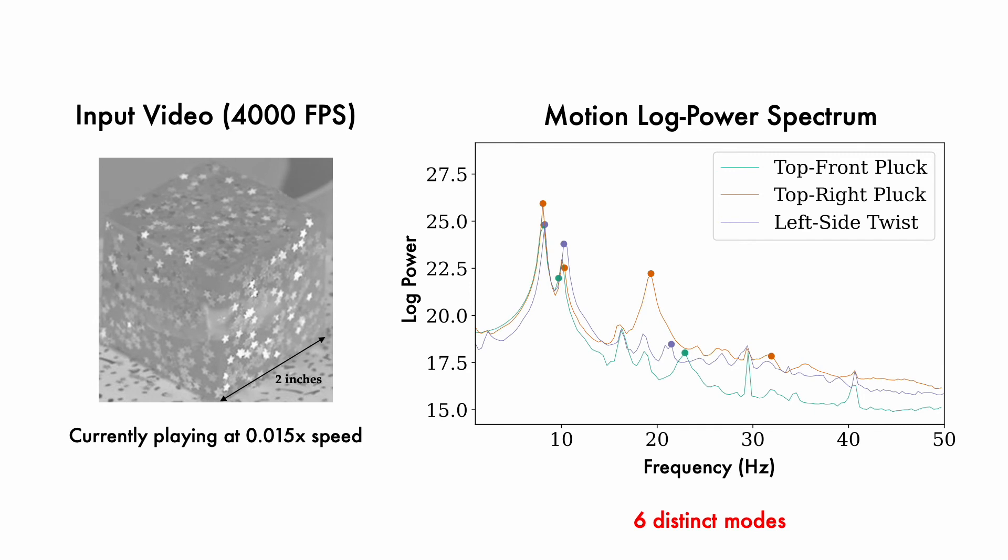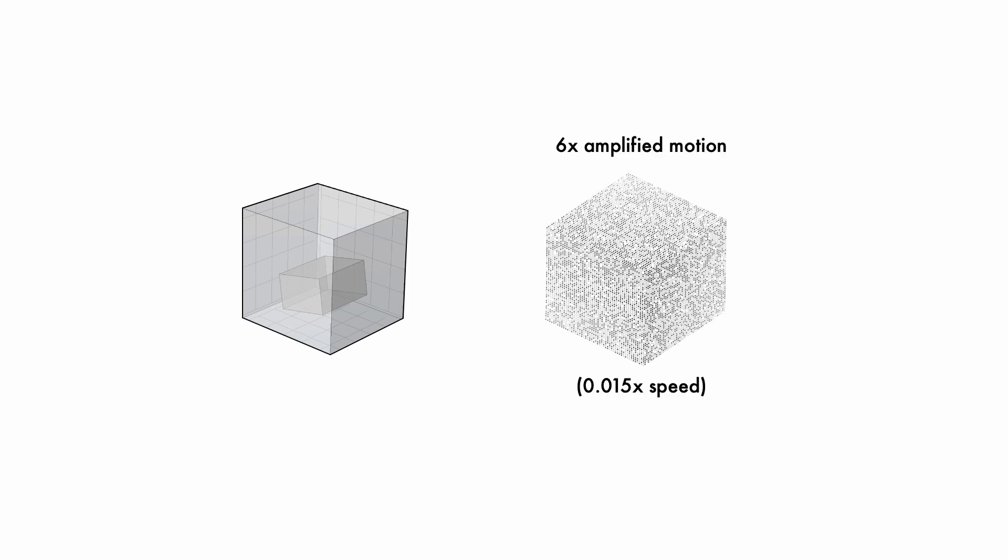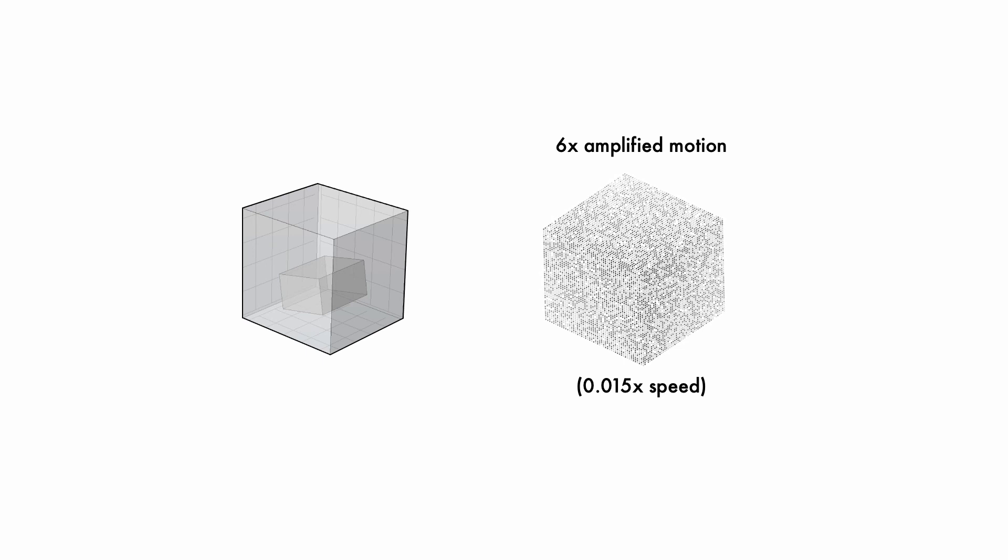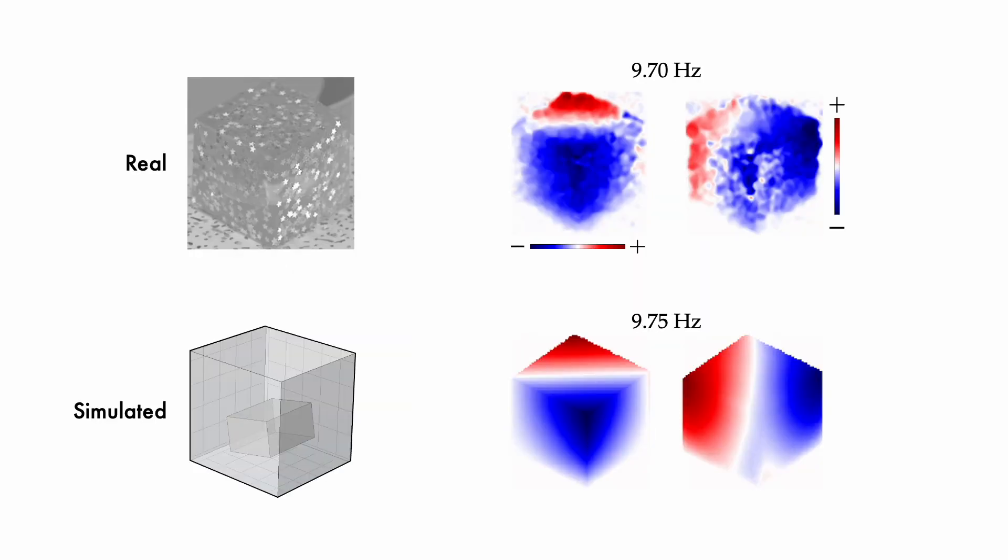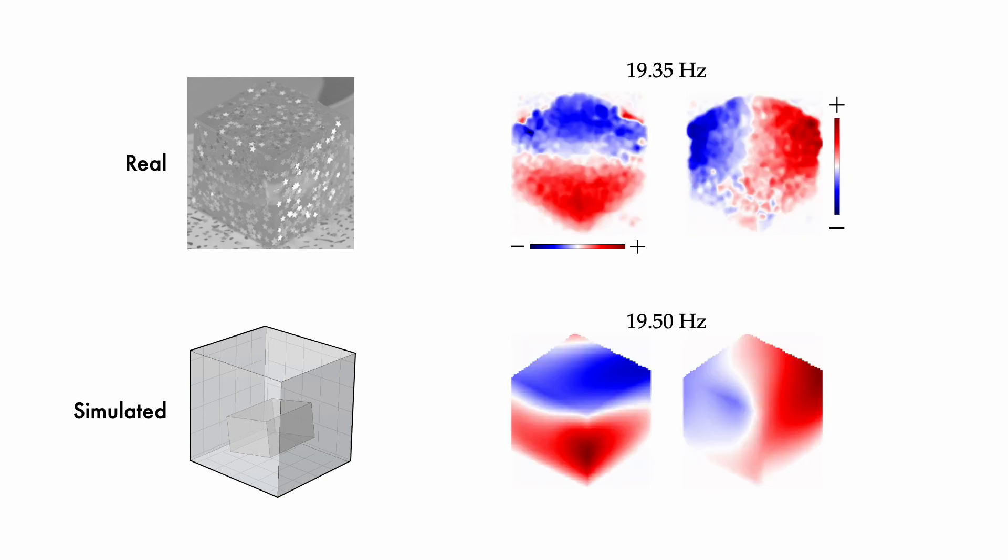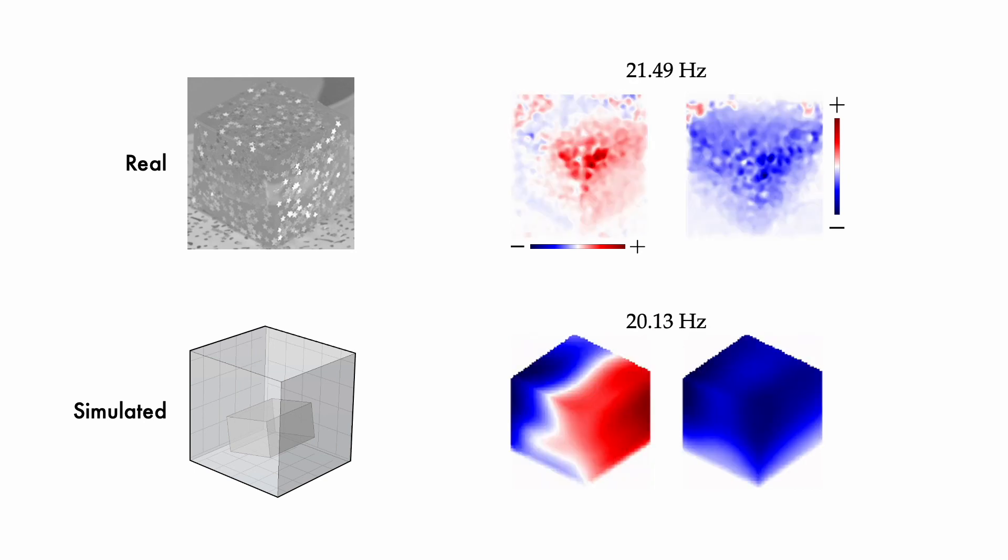In general, observing more modes results in a more accurate reconstruction. To verify our modal observations, we recreated the real cube in simulation. Here's an animation of its free vibration, based on damping parameters that were estimated from a real video of the cube. The image space modes that we found in real videos roughly agreed with image space modes of the simulation, in both appearance and frequency.